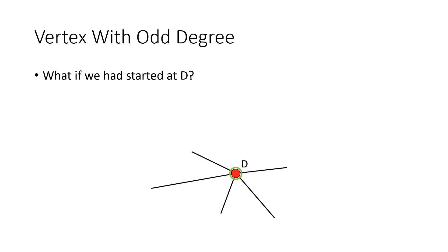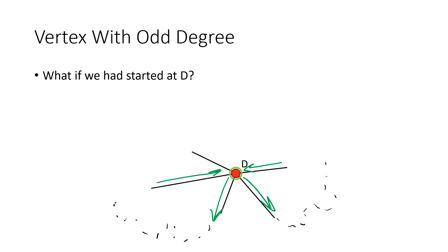Now what if we start at D? The first thing we do is leave along one edge. We wander around and eventually have to come back to D because there are unused edges, then leave again. We wander more and eventually come back — but now there's one more edge we haven't used. We can't stay at D since we need to use all edges exactly once, so we have to leave. But now we've used all of D's edges and can't return to our starting point without retracing steps. The problem is that every time we visit a vertex we use two of its edges, and D having an odd number means this can never work for an Euler circuit.